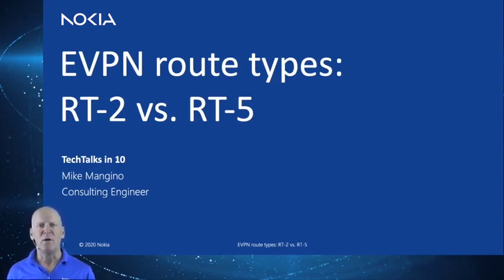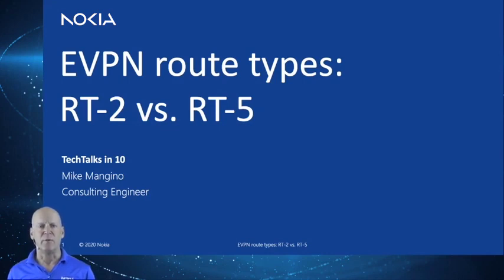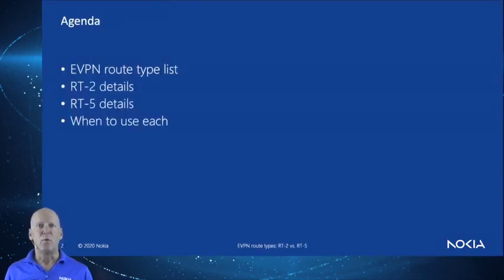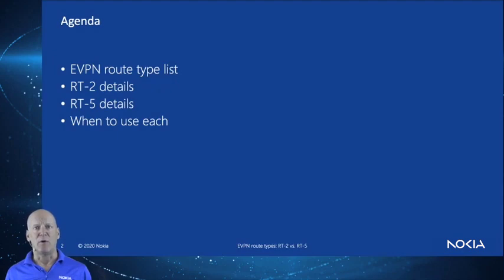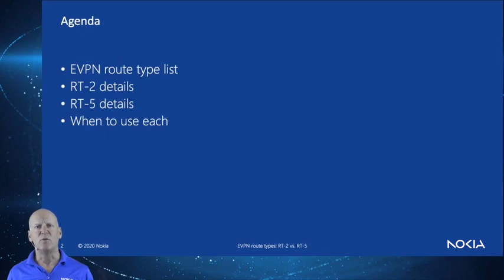Specifically, we're going to focus on RT2 and RT5 and the different scenarios they're used for, since the information they provide is similar. First, we'll walk through the EVPN route types and descriptions. Next, we'll go through RT2 details and an example, followed by RT5 and an example. Then we'll conclude with deployment scenarios and why you would choose one route type over the other.